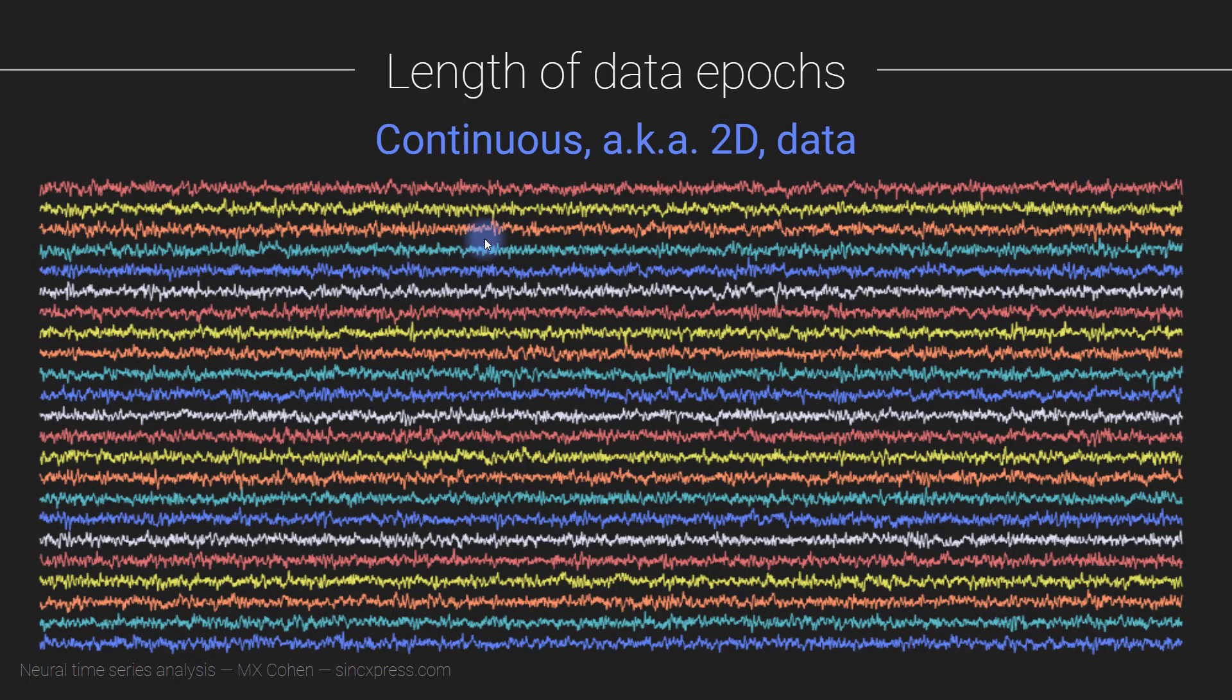So of course when you record your EEG data, it's being recorded continuously and you get this two dimensional data set. Well, assuming you have multiple channels, you get a two dimensional data set of continuous time by trials and continuous time. You know, this might be an hour of recording or half an hour of recording.